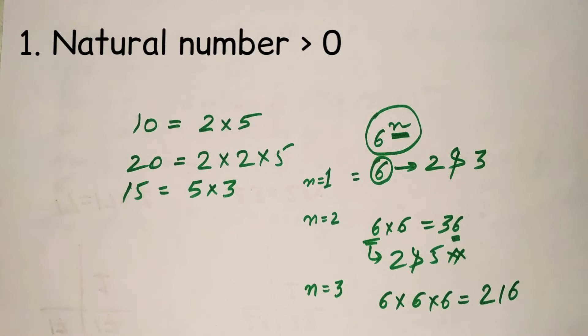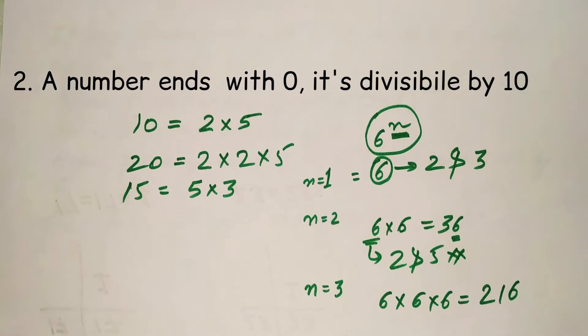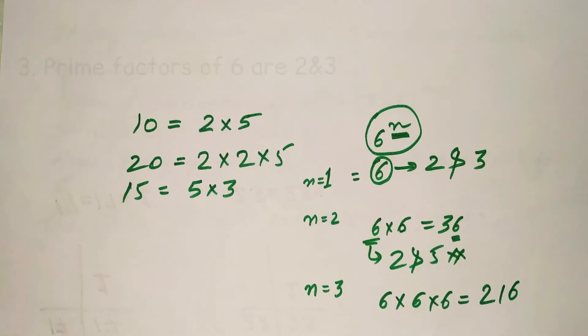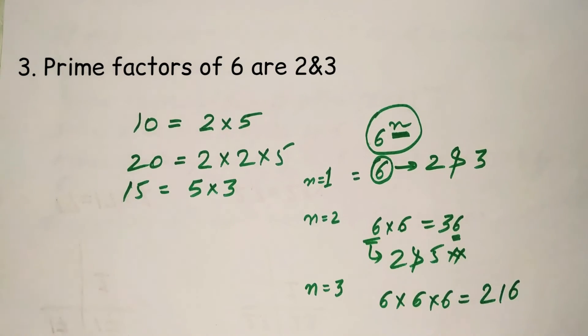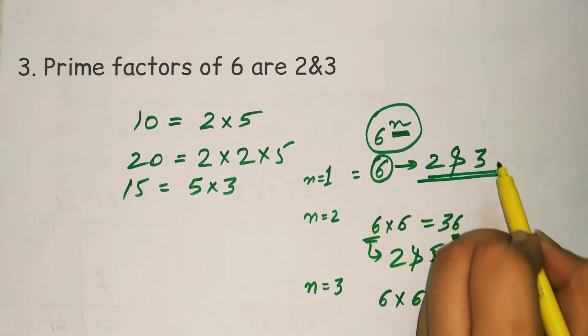So we have to remember three things before solving this question. First, natural numbers are always greater than 0. Second, a number ends with 0 if it's divisible by 10 or 2 and 5. Another, 6 is not divisible by 2 and 5. Prime factors of 6 are 2 and 3.